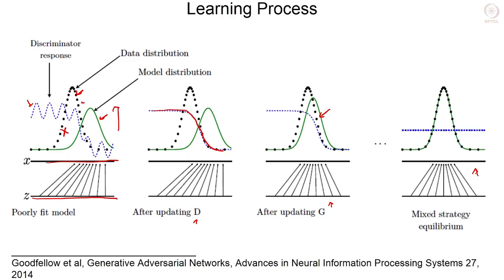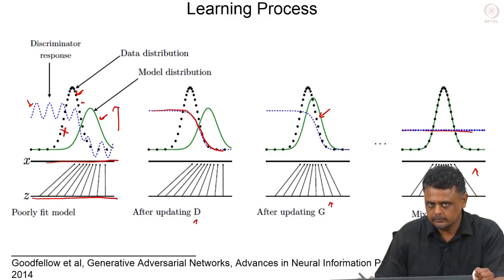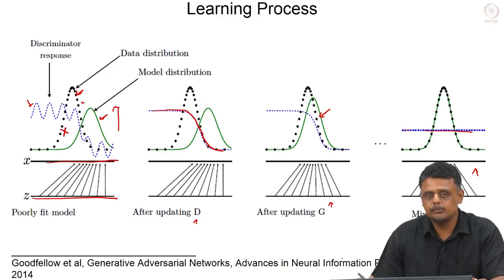After updating D, the blue dotted line gets better at discriminating between the data distribution and the model distribution. Another epoch of updating the generator leads to the green distribution moving closer to the black dotted distribution — the model distribution correctly approximating the true data distribution. Once both networks are optimally trained, the green and black distributions coincide and the discriminator outputs always 0.5, meaning it cannot distinguish whether data belongs to the training distribution or came from the generator.